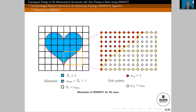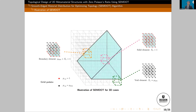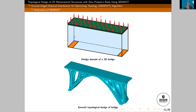This figure demonstrates the theory of SimDot for 2D cases. Similarly, this applies to SimDot for 3D cases. For example, you can use SimDot to design a bridge, and you can see that you get smooth boundaries. You can design different structures using SimDot.